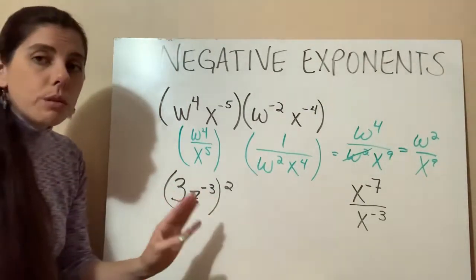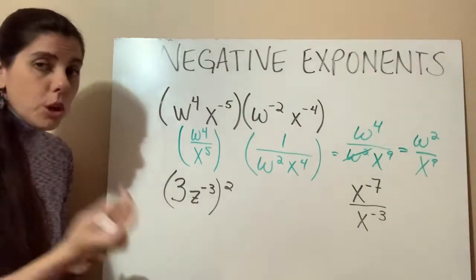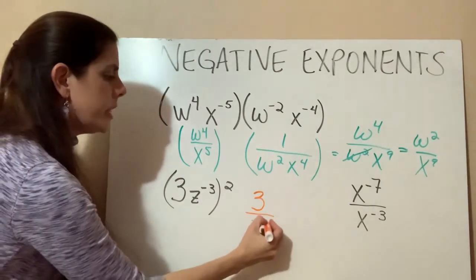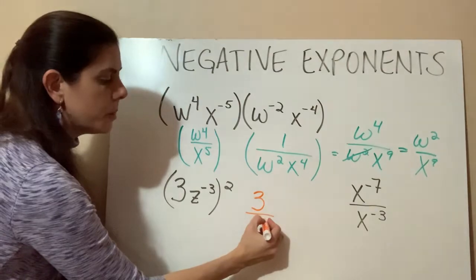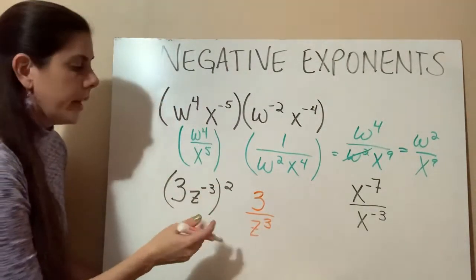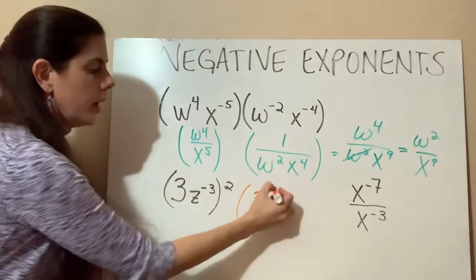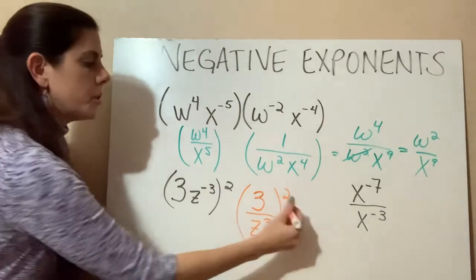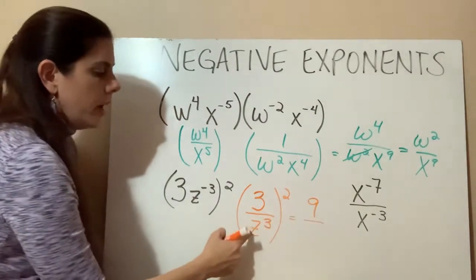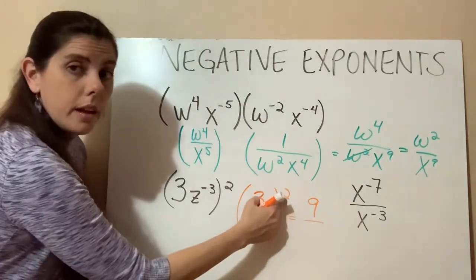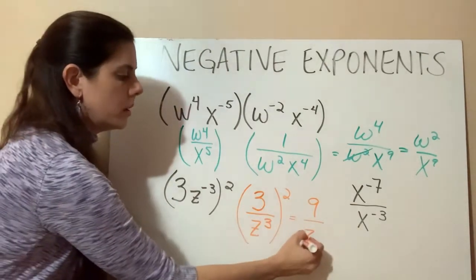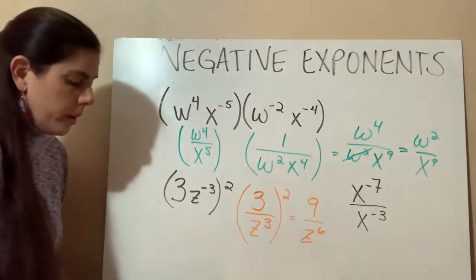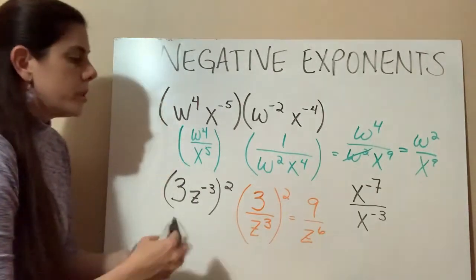So again, you can work through this a couple different ways and I'll show that to you. You can have this 3 on top and then move this z to the negative 3. Take the reciprocal. It goes to the bottom. It cancels out that negative, so we'll have z to the 3 on the bottom. And then all of that goes to the 2. So 3 times 3 equals 9, and then z to the 3rd, and then to the 2nd power, 3 times 2 is z to the 6th. And we can't simplify that any further than it already is.